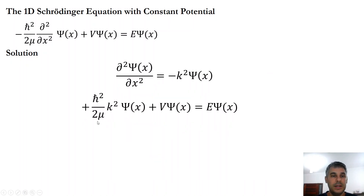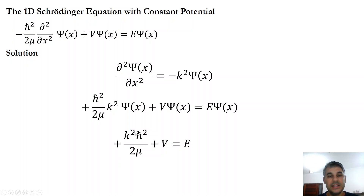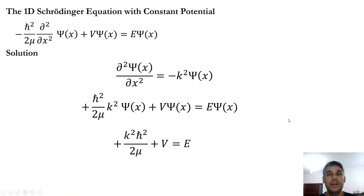Replacing the second derivative into the first term of the Schrödinger equation, we get plus h-bar squared over 2μ — where h is Planck's constant and μ is the mass of the particle — times k squared times psi of x, plus V times psi of x, equals the total energy times psi of x. For a non-trivial solution where psi of x is not zero, we can divide through and obtain that k squared times h-bar squared over 2μ plus the constant potential V gives the total energy. This is the energy of a freely moving particle in a constant potential; we have not yet described the particle-in-a-box problem.